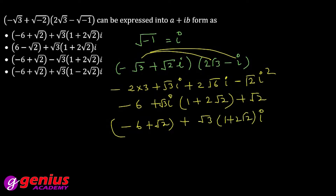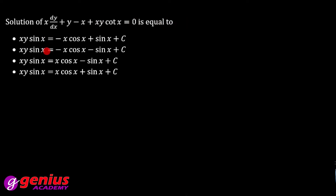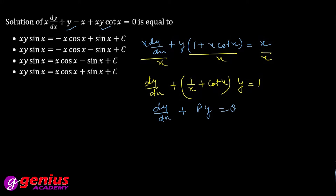Next is the solution where you have to find values equal to 0. Taking y common, we get y into (1 plus x cot x) equal to minus x. Dividing the equation by x gives dy/dx plus (1/x plus cot x) times y equal to 1. This is in the standard form dy/dx plus Py equal to Q. The integrating factor is e raised to power integral of P dx.